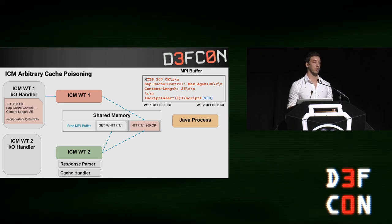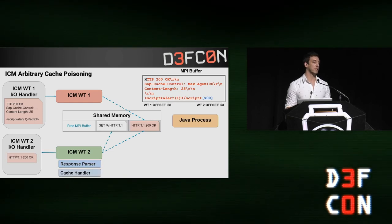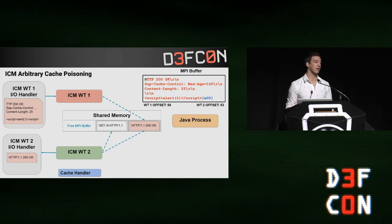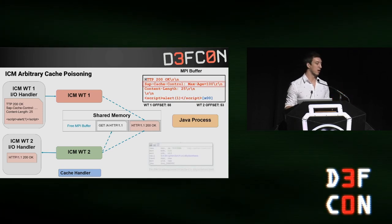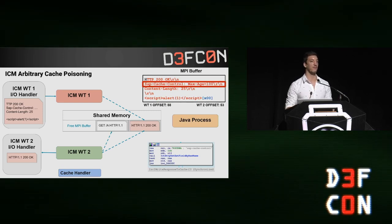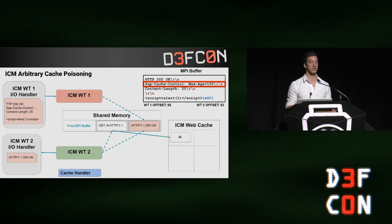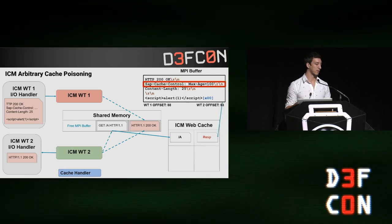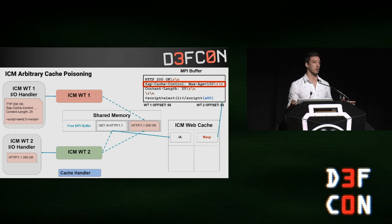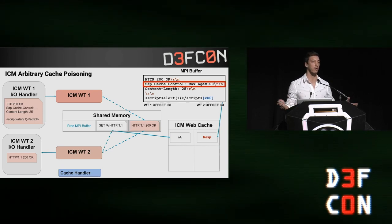When this tampered response is received by the worker thread, the response parser is called and the response is forwarded to the client. Then the response cache handler is also called. In the MPI buffer in the slide, you can notice an extra header: the SAP Cache Control Header. This is an internal header used by the cache handler to decide whether to store the response. We can place this so that the tampered response gets stored in the internal cache. Then we can modify any resource we want with an arbitrary response. We can choose which URLs are modified, so we can modify any URL with anything we want.